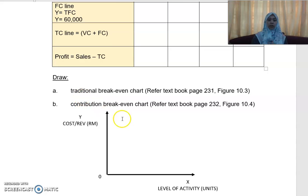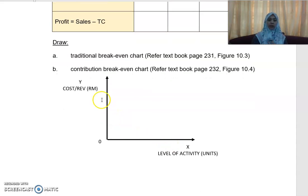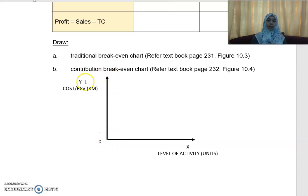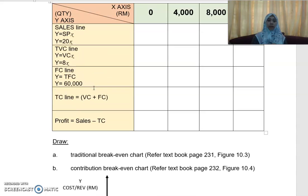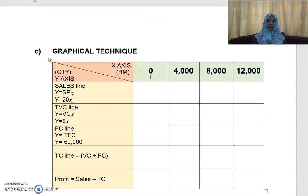Your x-axis is your level of activity, your quantity, or your units of production and sales — to be more precise, the level of activity, because it applies to both services and production. I will use the general term: level of activity. Your y-axis will be the cost or revenue in RM. Your x will be the number of units that you produce and sell. Bear in mind that in CVP analysis, we assume production and sales are equal — if you produce 4,000 units, you also sell 4,000 units.